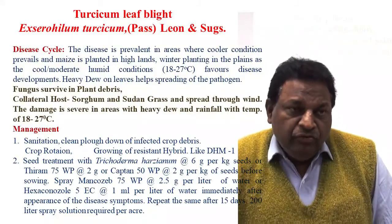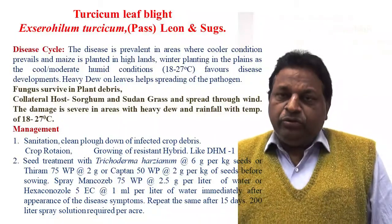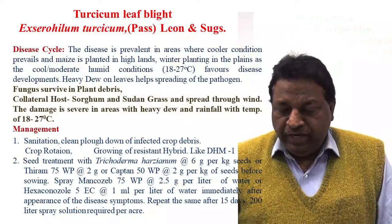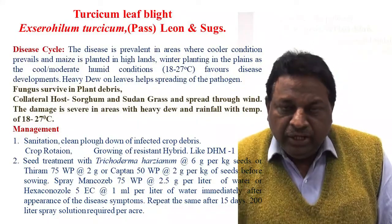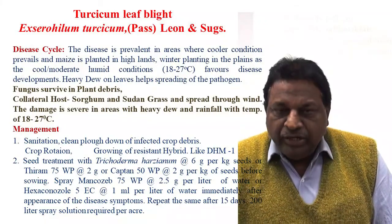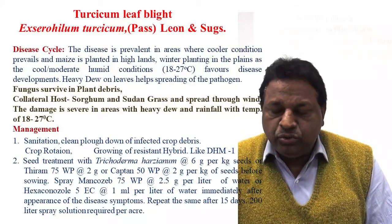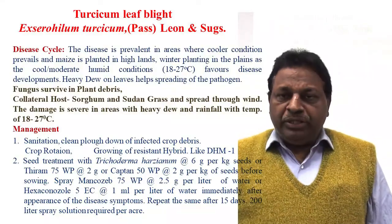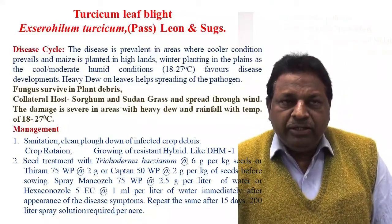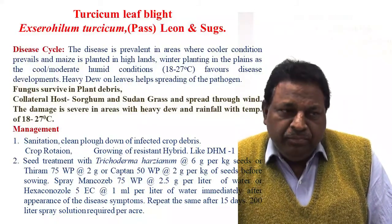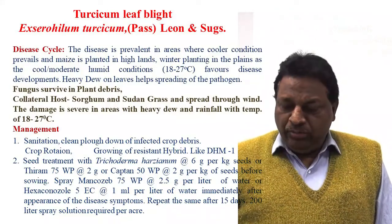For management of Turcicum leaf blight, field sanitation is very important. Second, crop rotation plays an important role. Third, growing of resistant variety such as hybrid DHM-1, which is resistant against Turcicum leaf blight. Next is seed treatment with Trichoderma viride at the rate of 6 to 10 grams per kg of seeds. If using chemicals, we can use captan or mancozeb at 3 grams per kg of seed, or hexaconazole at 1 to 2 ml per litre of water.